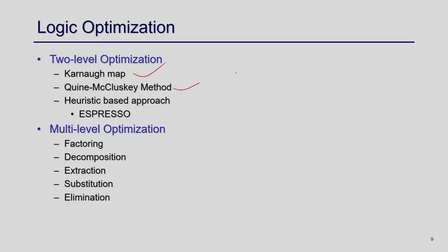For two-level optimization, well-known methods include the Karnaugh map, the Quine-McCluskey tabular method, and a heuristic-based approach called Espresso. For multi-level optimization, techniques like factoring, decomposition, extraction, substitution, and elimination are used.